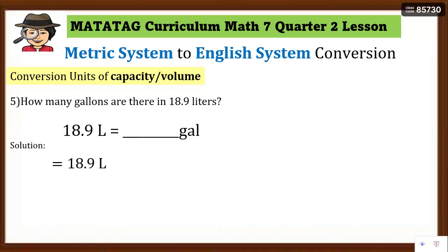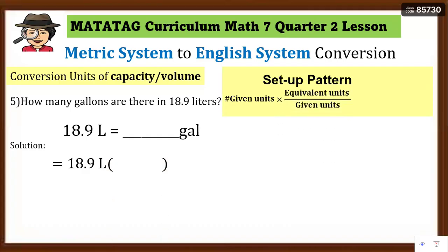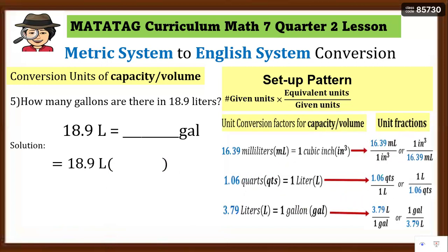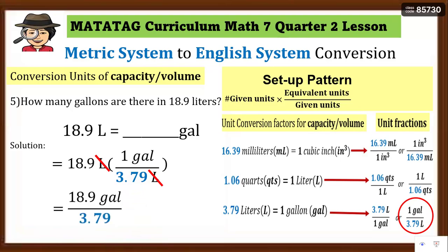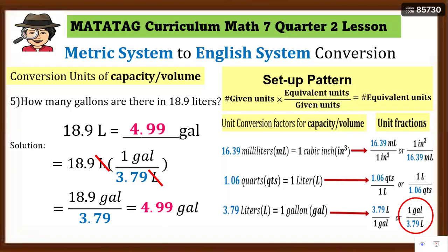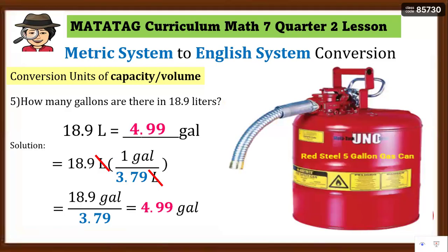Number 5: how many gallons are there in 18.9 liters? Write the equation. Since the given unit is liters and we need gallons, the unit fraction has liters in the denominator and gallons in the numerator. We use 1 gallon over 3.79 liters. Set up, cancel liters, multiply: 1 gallon times 18.9 = 18.9, divided by 3.79 equals 4.99 gallons. Rounded up, that's 5 gallons. In real life, this is like a Red Steel 5-gallon gas reserve container — very useful especially these days.